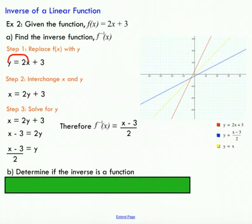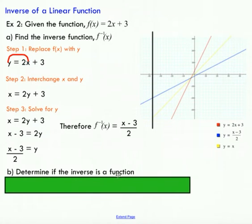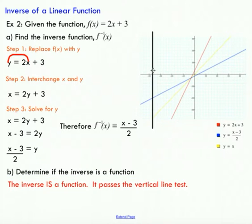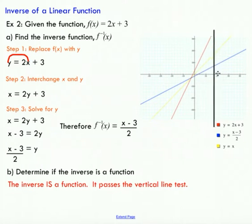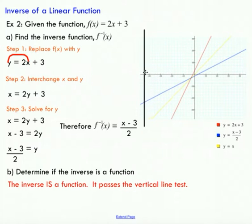The second question is: determine if the inverse is a function. As it turns out, just because a function is a function does not mean its inverse is also a function. I'm going to show that this is a function by using the vertical line test. I'll pass the vertical line through my blue graph — you can see there's never a point where there's more than one point on that vertical line. Therefore, we can conclude this is, in fact, a function.